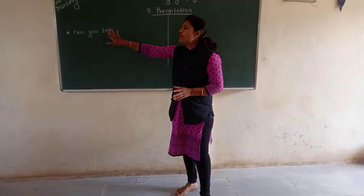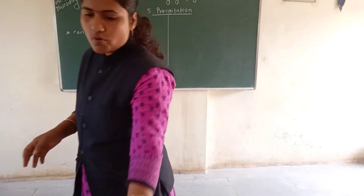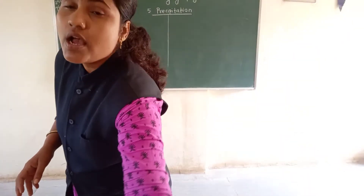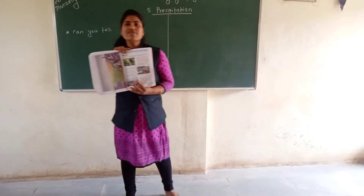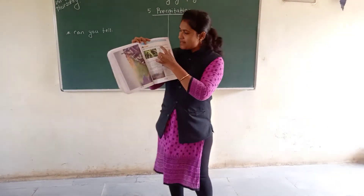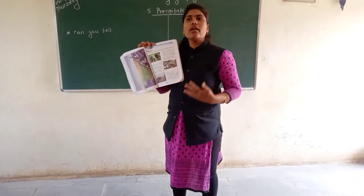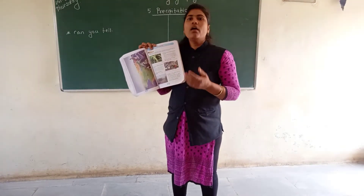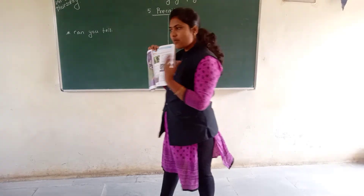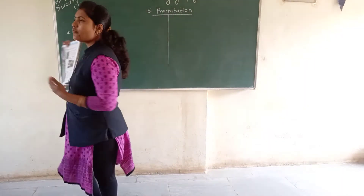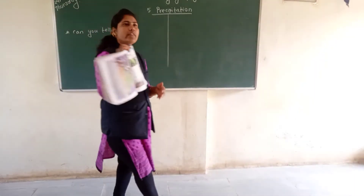Let's look at the 'Can You Tell' activity. If you see in our books page number 41, there is a 'Can You Tell' section. There are some pictures we have to observe. We have to make one sentence on our own based on a sentence already given, and also find answers to the questions given below.